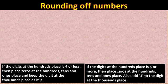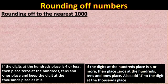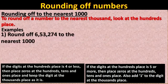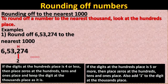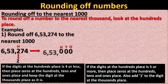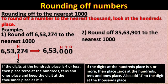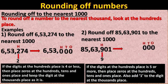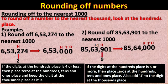Similarly, to round numbers to the nearest 1000, we look at the hundreds place. For example, in 6,53,274, the digit at the hundreds place is 2, which is less than 5, so place zeros at the ones, tens, and hundreds places and keep 3 as it is along with the other digits. In example 2, 9 is in the hundreds place and is greater than 5, so place zeros at the hundreds, tens, and ones places, and add 1 to the thousands place: 3 plus 1 equals 4 thousands. Therefore, the rounded value is 85,64,000.